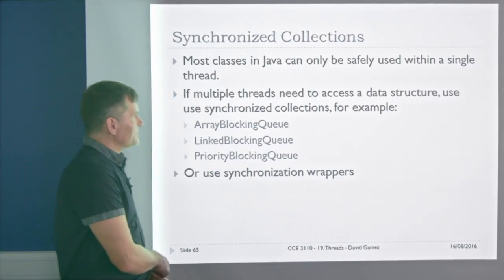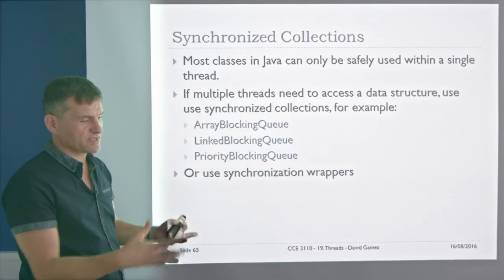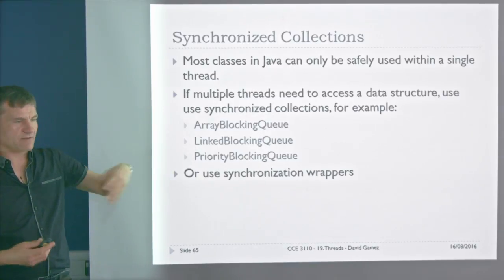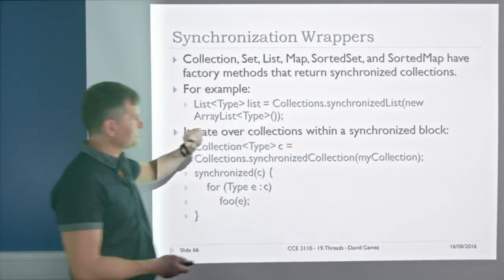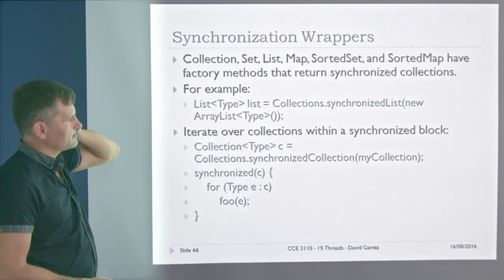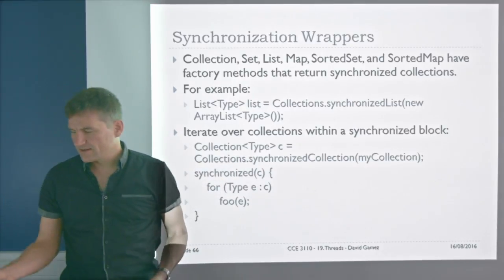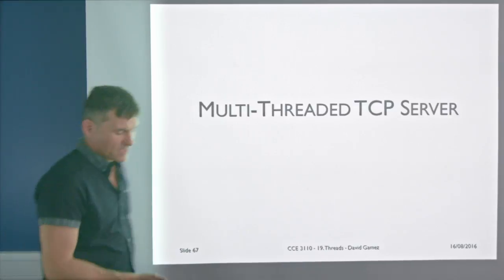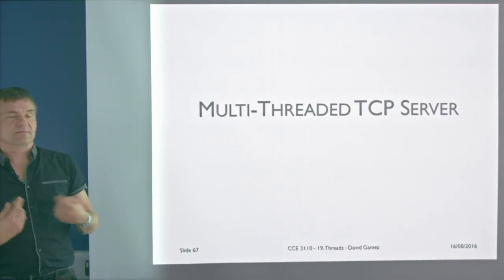Most Java classes can only be safely used within a single thread. If multiple threads need to access a data structure, you can use your own synchronized methods, thread-safe synchronized collections, or synchronization wrappers that wrap a standard collection and return a synchronized version. Note that you still need a synchronized block to iterate over the collection safely.